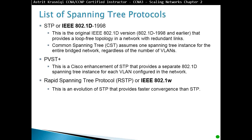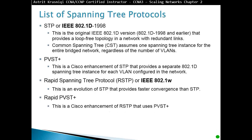RSTP still uses one Spanning Tree instance for the whole entire topology regardless of how many VLANs you have. Then we have Rapid Per-VLAN Spanning Tree. Cisco said let's speed things up, so we have Rapid Per-VLAN Spanning Tree Plus — every VLAN still has one Spanning Tree, but it's Rapid, so you can transition from blocking to forwarding in a very fast time.